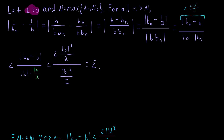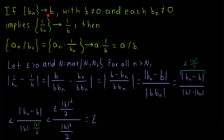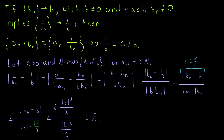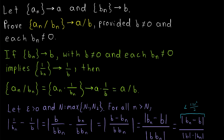Thus, given any epsilon greater than 0, we can find a number big N so that every term of our sequence after the big Nth term is within epsilon of 1 over b. Thus, if a sequence bn converges to b with b not equal to 0 and each term of the sequence not equal to 0, then the sequence of reciprocals 1 over bn converges to the reciprocal of the limit 1 over b. Therefore, by the limit law for the product of sequences, the sequence an times 1 over bn converges to a times 1 over b, which is a over b. And of course an times 1 over bn equals an over bn. Hence, if an converges to a, bn converges to b, b is not equal to 0, and no term of bn is equal to 0, then the sequence an over bn converges to a over b. The quotient of convergent sequences converges to the quotient of their limits.